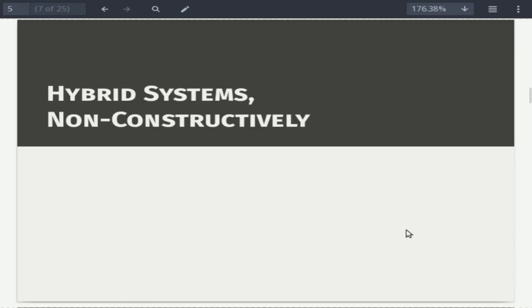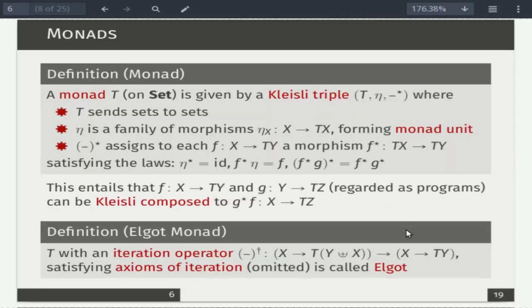So we're dealing with hybrid systems, and we would like to regard hybridness as a computational effect, so we would like to involve monads as proposed by Moggi. So just a quick recap. Monad can be regarded as a certain type constructor. So it sends sets to sets and has a certain additional structure. And the point of the structure is basically to ensure that if we regard maps like this as denotations of programs, then there is a neutral program and there is a notion of composition of this program, which is called Kleisli composition. So the axioms of monads in this sense provides precisely what is needed to implement this idea.